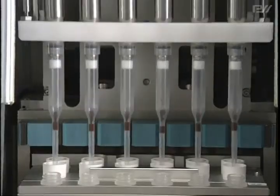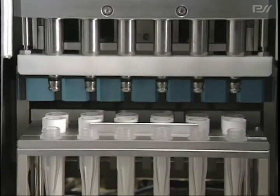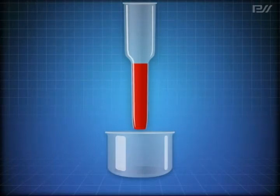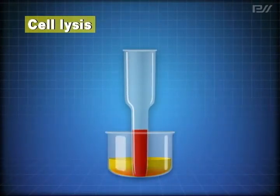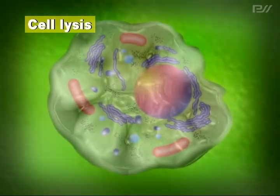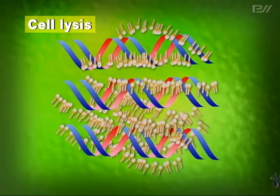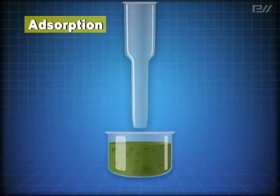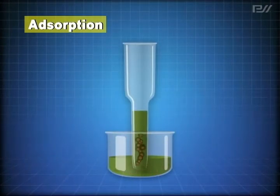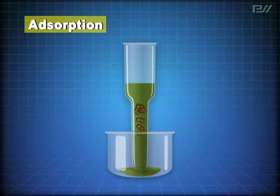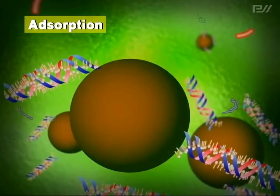Using DNA extraction as an example, I will describe magtration technology. First, the sample is dissolved in a solution containing lysis buffer. The sample is taken apart at the cellular level and the DNA from the nucleus dissolves into the solution. Magnetic particles are placed in the solution in advance. As the tip aspirates and dispenses the liquid, the solution is resuspended.